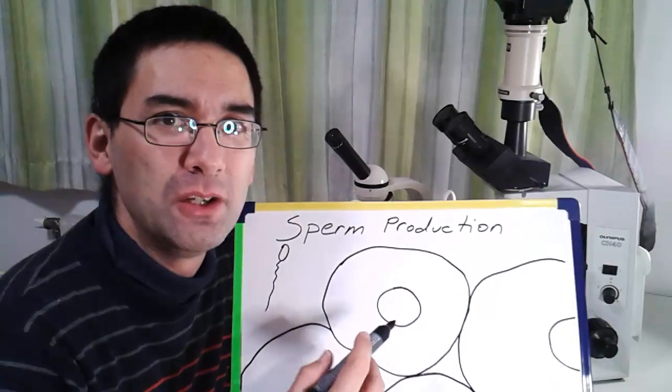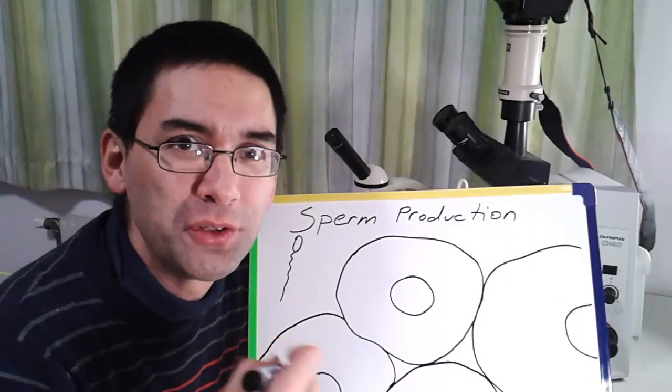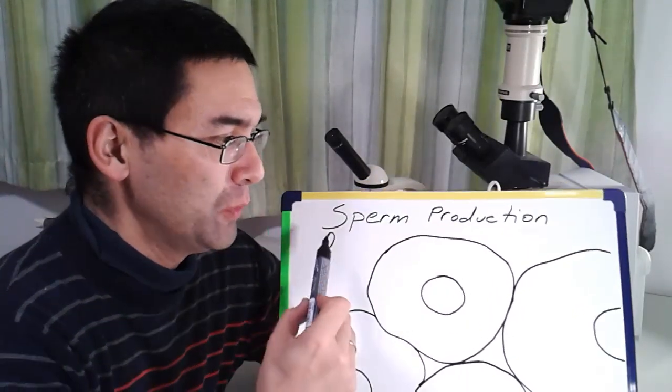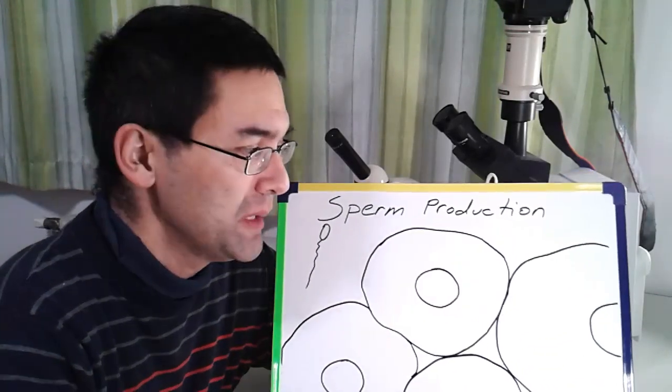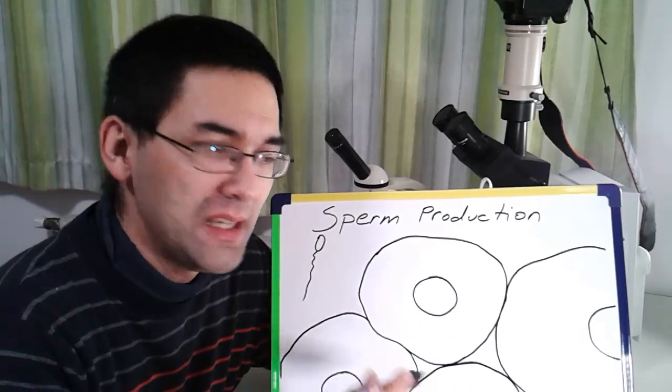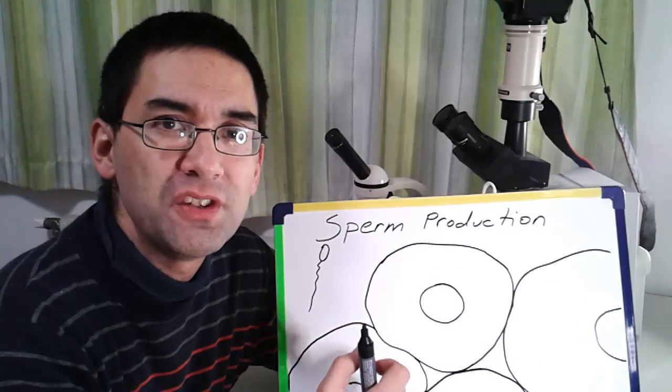And what I've made here is a diagram, so I'm going to explain to you first what you're going to see later on under the microscope. So first of all, what you see is a schematic diagram of the cross-section of testis tissue. Inside the testis, there are many of these tubules, and this is now the cross-section of one of these tubules.